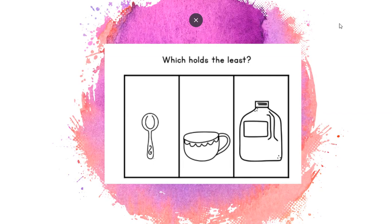Which holds the least amount. So the smallest amount. Which holds the smallest amount? The spoon, the cup, or the jug? The spoon holds the least amount.